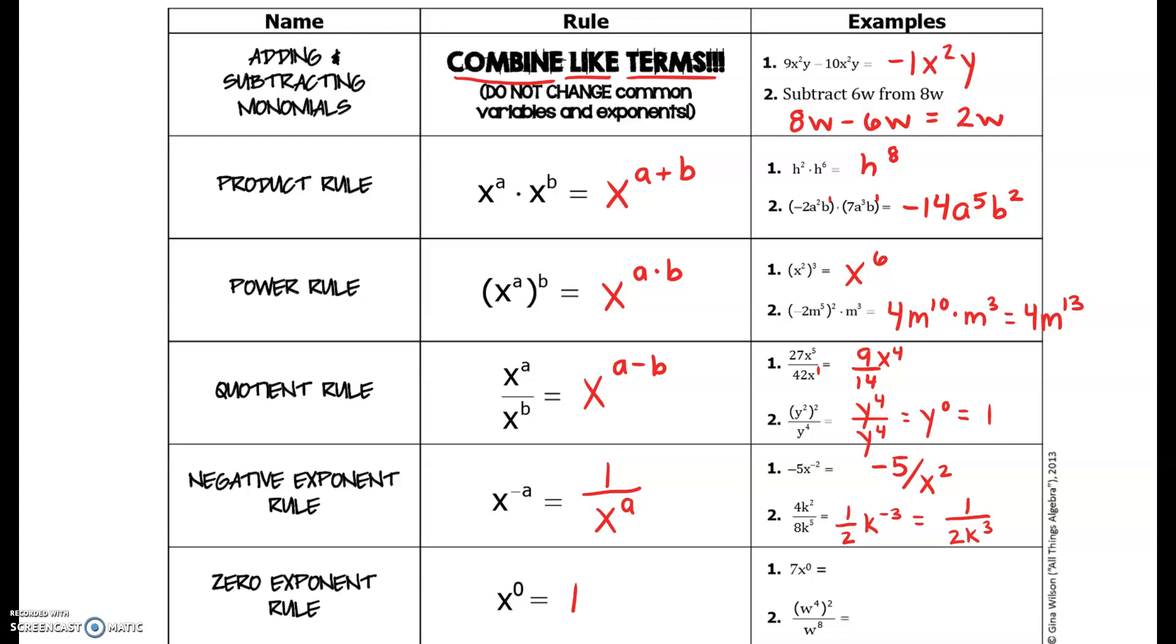For the last set, you have your zero exponent rule, so we know we have x to the zero power. That will turn into one. However, there's a seven that's being multiplied by that one, so your final answer here would equal seven. Last but not least, in number two, multiply four and two to get eight and use that quotient rule, which tells us to subtract. Eight minus eight is zero, and anything raised to the zero power equals one.